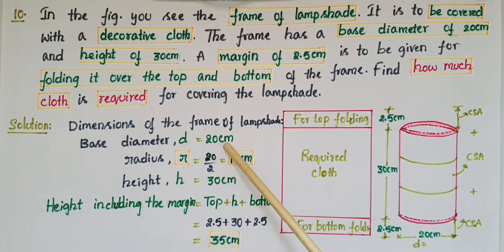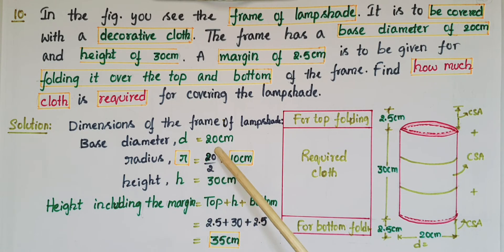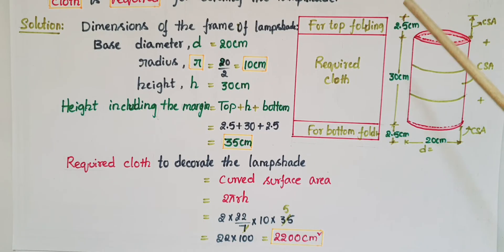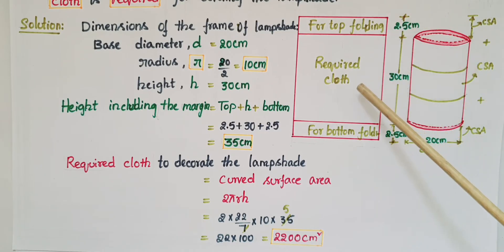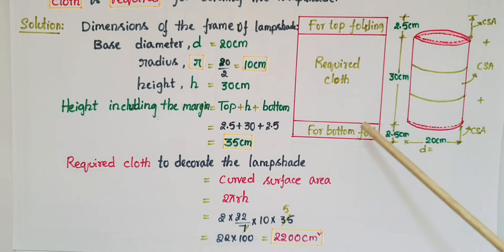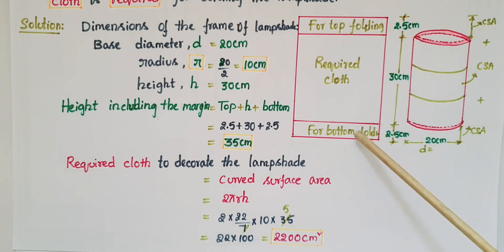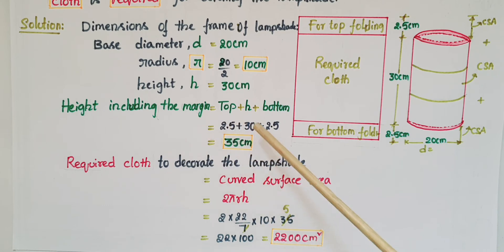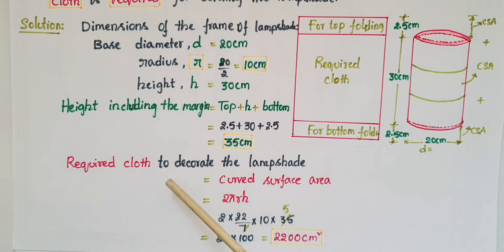The dimensions of the frame are: base diameter d = 20 centimeters, and radius r = diameter divided by 2 = 10 centimeters. The height of the lampshade is h = 30 centimeters. However, the required cloth height includes a margin of 2.5 centimeters for top folding and 2.5 centimeters for bottom folding. So the total height = 2.5 + 30 + 2.5 = 35 centimeters.